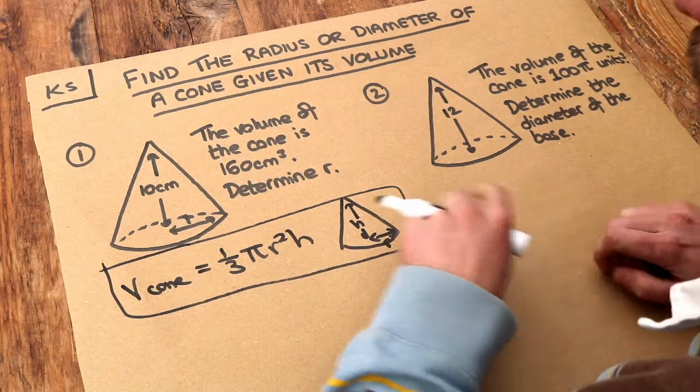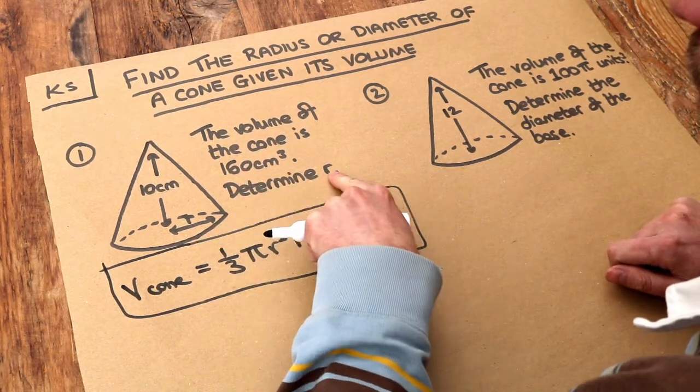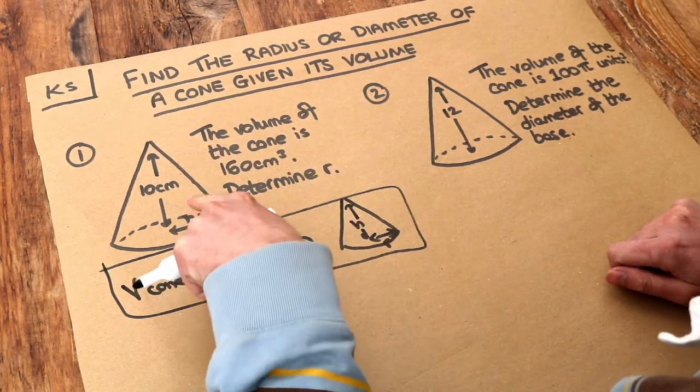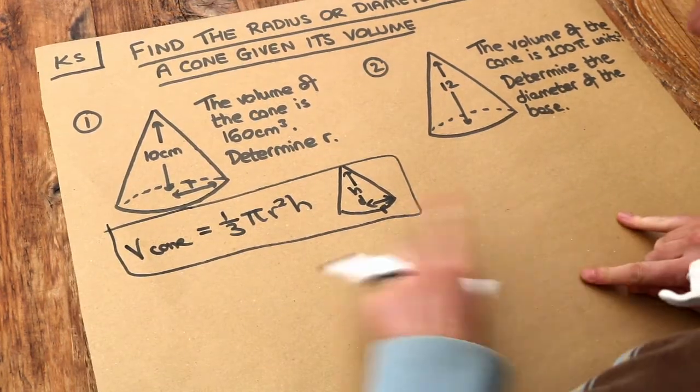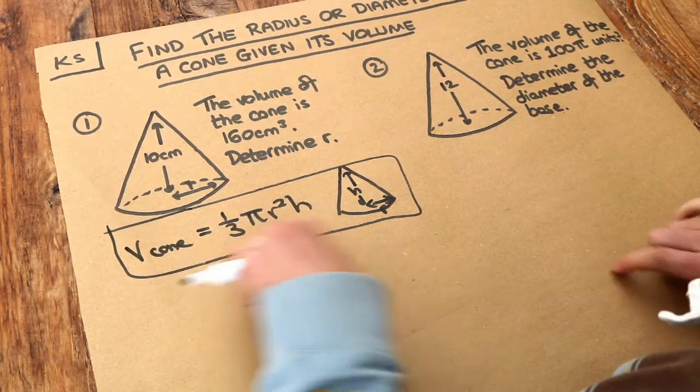The interesting thing here is that we're given the volume and we're trying to find out the radius, rather than being given the radius and height and trying to find the volume. But the principle is just the same - we just substitute what we know into this equation.